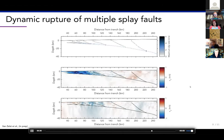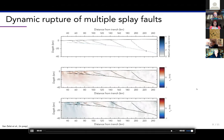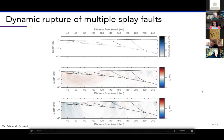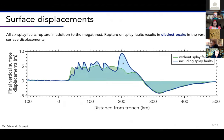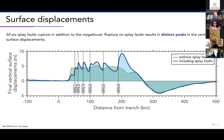During one earthquake simulation we see that all six splay faults can be activated simultaneously within a single rupture. Looking at the final vertical surface displacements, a model without splay faults compared to the model with splay faults shows very clear peaks corresponding to the splay faults. There are much larger vertical displacements at the locations where splay fault rupture occurs, which is important for tsunami hazard.